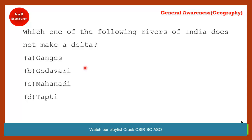Which of the following rivers of India does not make a delta? Ganga makes a delta, but the question asks which does not. Tapti doesn't make a delta — it makes an estuary. All rivers which flow from east to west do not make deltas; they make estuaries. Ganga, Godavari, and Mahanadi flow from west to east and merge into the Bay of Bengal, so they make deltas. But Narmada and Tapti are the only two rivers which make estuaries.